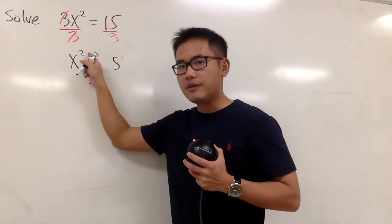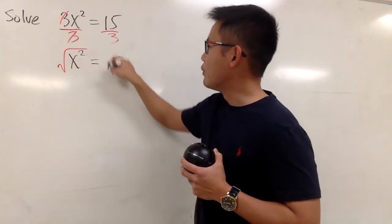And then, to get rid of this square, we can just take the square root on both sides.